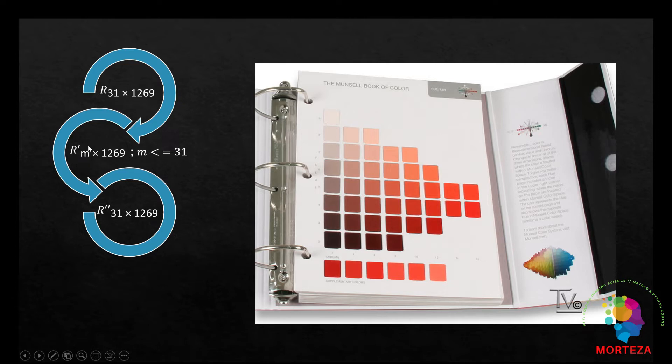The data is actually a set of spectral reflectance data belonging to the famous Munsell color system. The Munsell color system has been made into a book as shown here whose spectral reflectance were consequently measured. So the spectral reflectance of each square here is measured and there's 1269 samples, so it resulted in a 31 by 1269 data set.